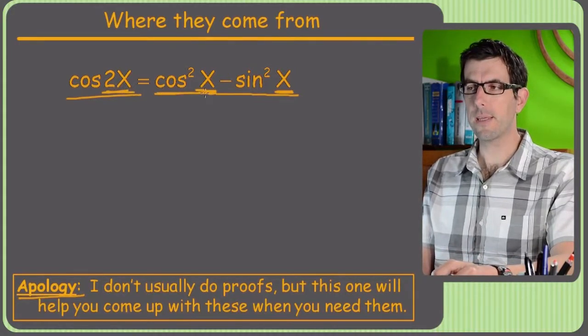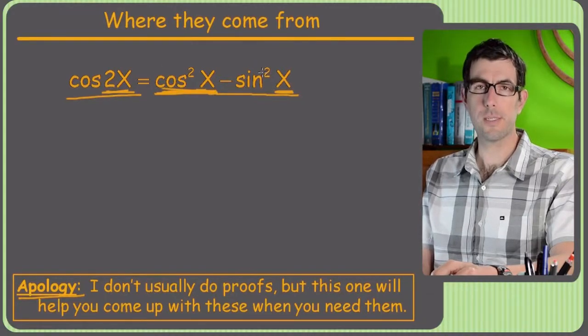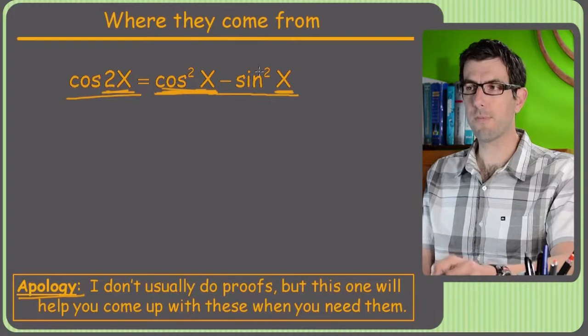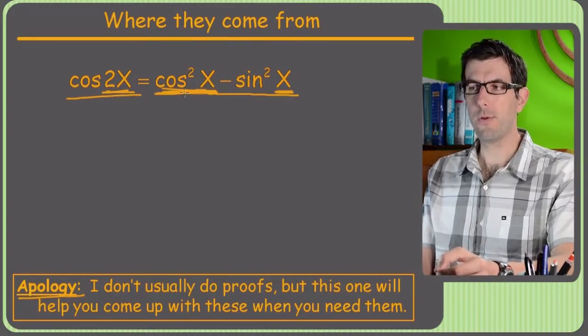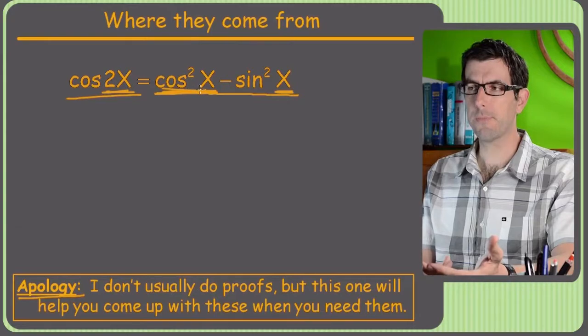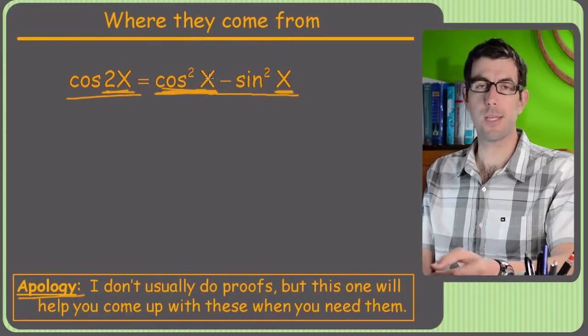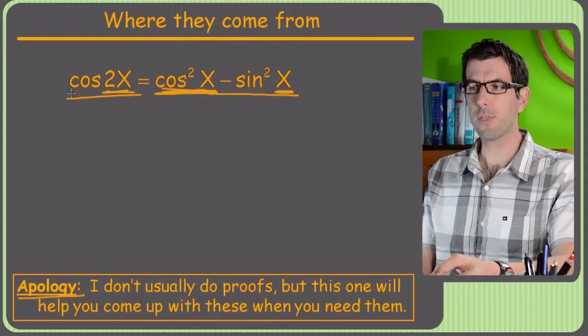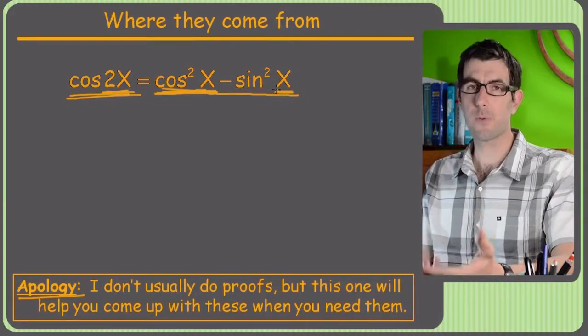So that's why it was called the double angle formula. You can see right here that if you wanted to, you could solve this for cosine squared or sine squared, and that's where those two formulas on the previous page come from. Now, one note, we can't go straight to those formulas because, for example, if we tried to solve for cosine squared right now, we'd have a cosine 2x, but we'd also have a sine squared x.